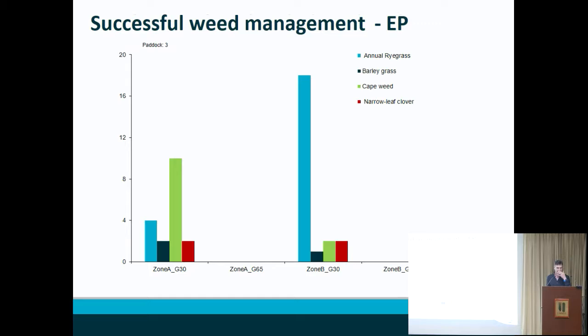Again, this field had reasonably successful weed management, with an emerging population of ryegrass pointing to a future management issue, but 16 plants per square metre is unlikely to damage yield, particularly in a six-tonne crop.